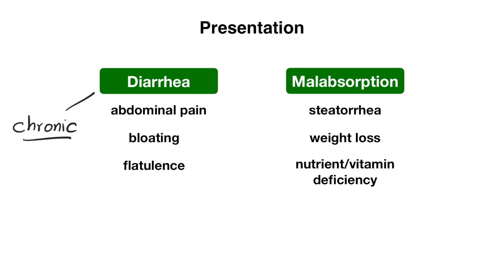Malabsorption occurs because celiac disease is an inflammatory disorder that disrupts the lining of the small intestine, affecting absorption. In particular, fat absorption can be affected, leading to steatorrhea or fatty stools. Look out for terms like bulky stools, floating stools, or foul-smelling stools, as those terms are often used to describe steatorrhea on a test question.